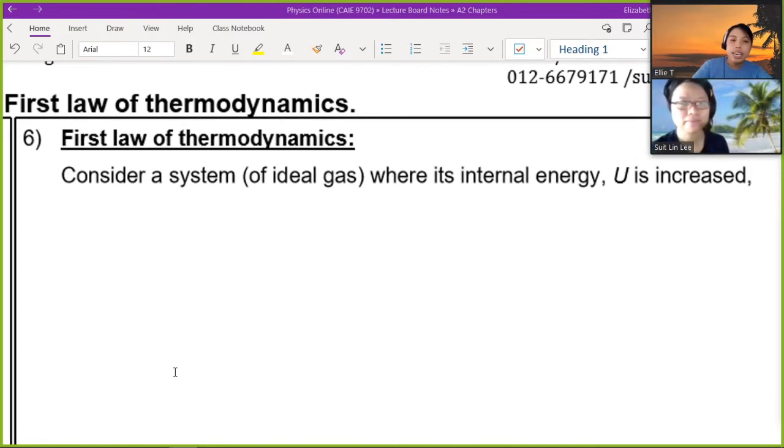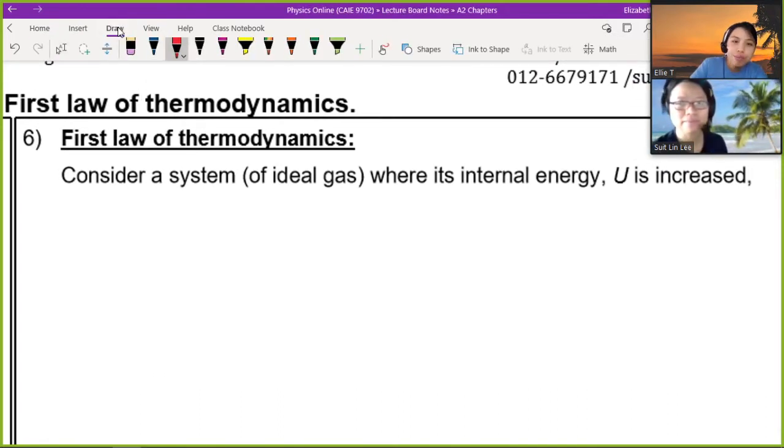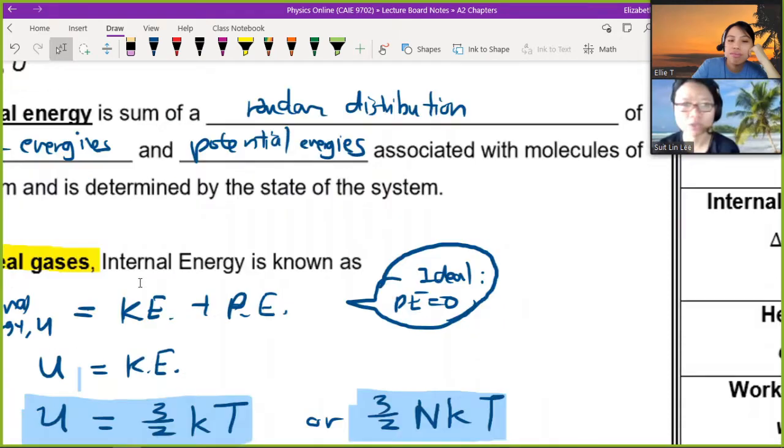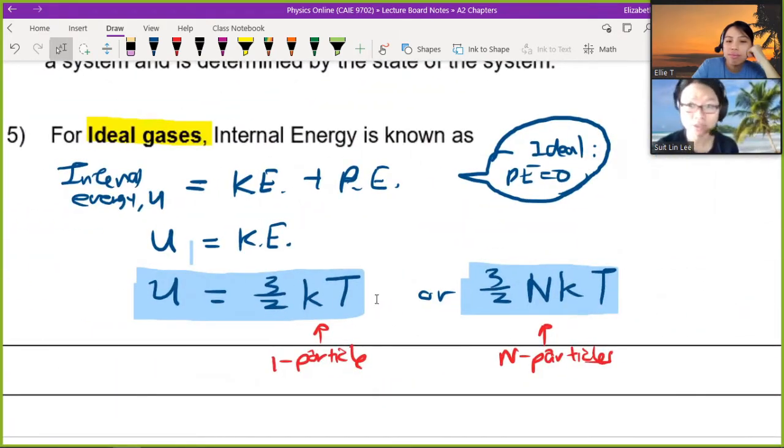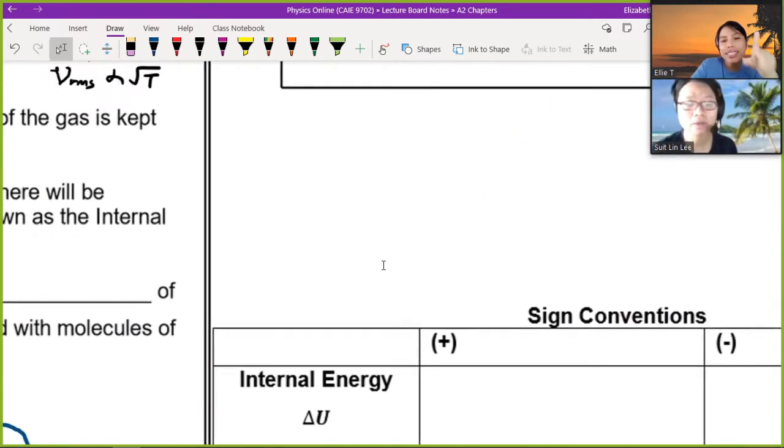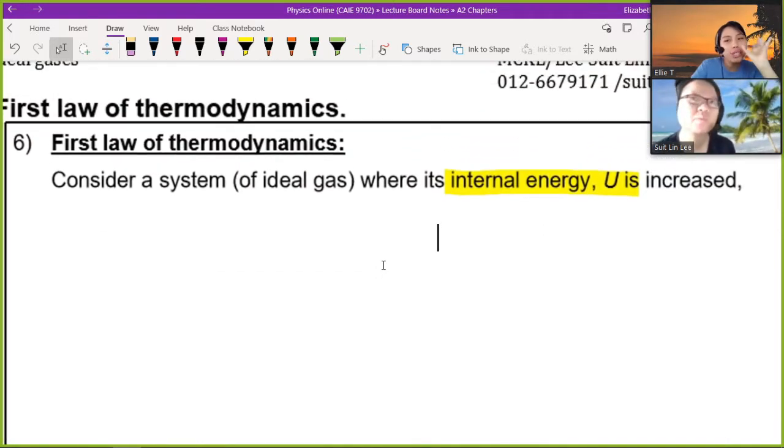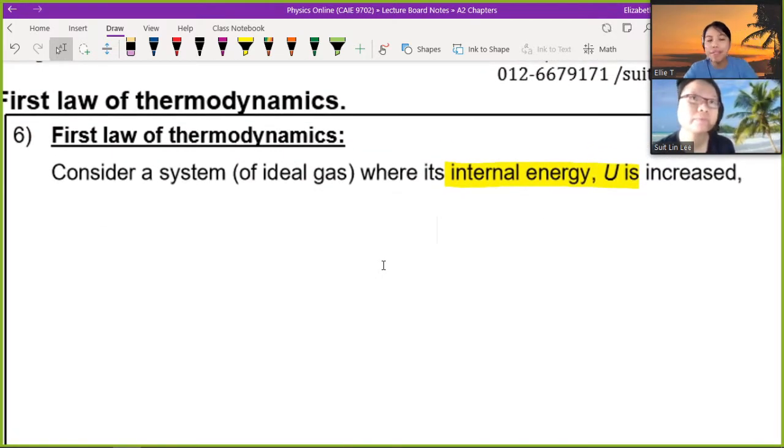Ms. Lee, consider a system of ideal gas where the internal energy is increased. But how do you increase internal energy? Well, based on the equation we had just now, if we increase the internal energy, it means that we increase the temperature. So maybe that's one clue. But let's pause here - temperature is one clue, there's another way. Let's look at the simulation to figure that out.